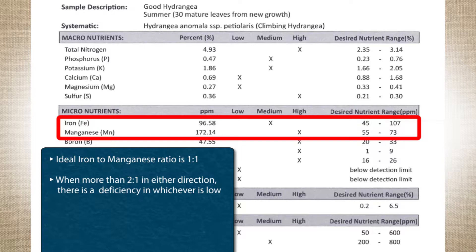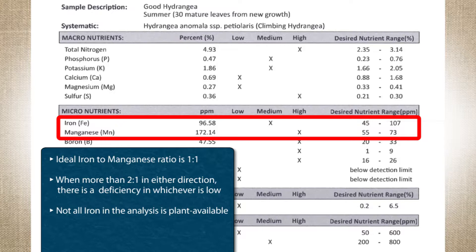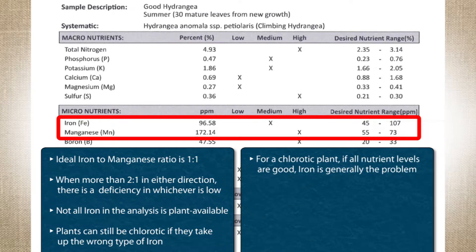There's another thing about iron in leaf tissue that you have to be aware of: you can't always count on the iron in a leaf analysis being available to the plant to manufacture chlorophyll. There are basically two valences or two types of iron in soil, and plants will take both of them up. If they're taking up the wrong kind of iron, you can have a good-looking iron level in the leaf tissue and yet have a plant that is quite chlorotic — quite yellow. When I'm looking at an analysis of a chlorotic plant and everything looks good, generally iron is your problem, because iron is so touchy about whether it's really available or not.